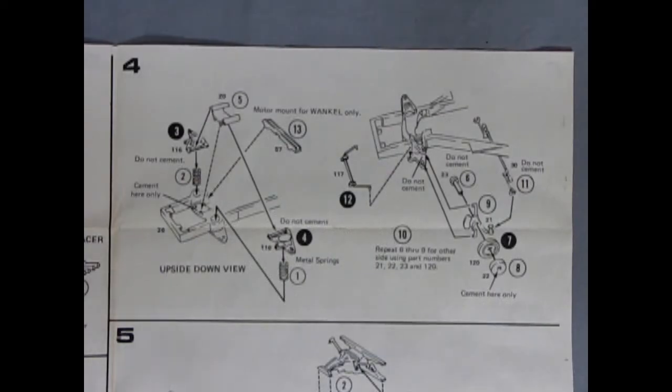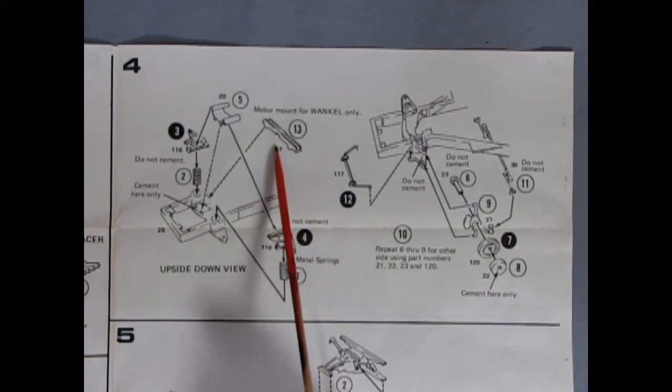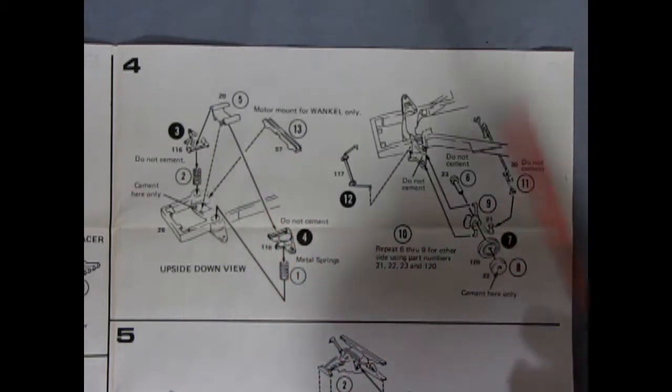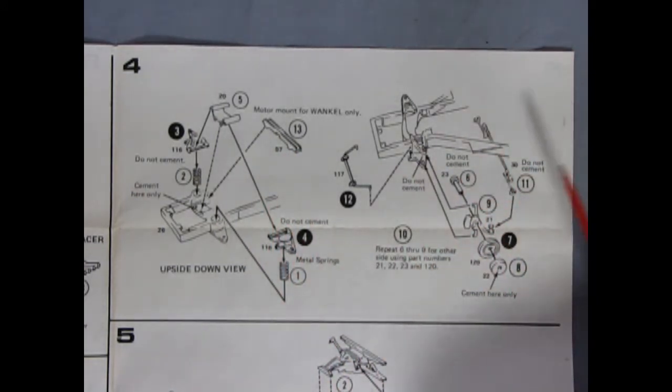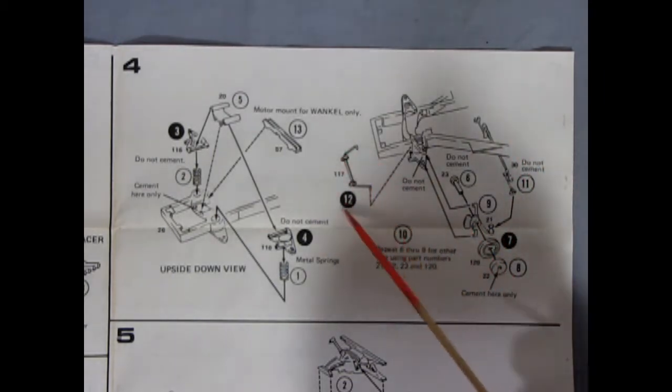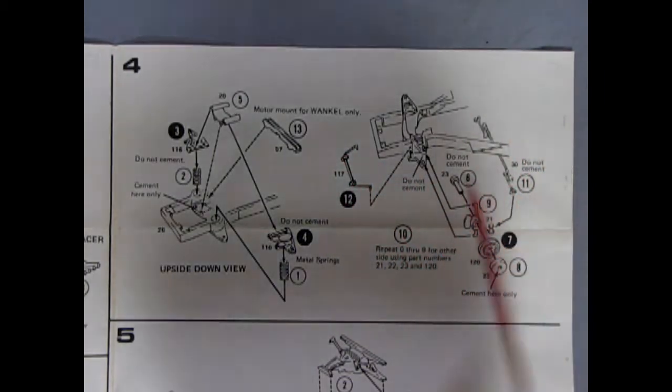Here we have our front suspension showing the real metal springs going in place with our upper A arms. And this little tab locks them in place so that they will move up and down. And then we have our motor mount for the Wankel, which we glue in here, but you leave it off for the 454. Then underneath, we have our poseable front suspension and our front stabilizer going in place here.